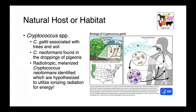Cryptococcus species are found in the environment. Cryptococcus gattii is associated with trees and soil, while Cryptococcus neoformans is found in sites contaminated with the droppings of pigeons. Interestingly, melanized Cryptococcus — strains producing dark pigments — have actually been identified at the Chernobyl nuclear site, utilizing ionizing radiation as a source of energy.